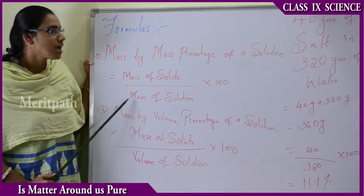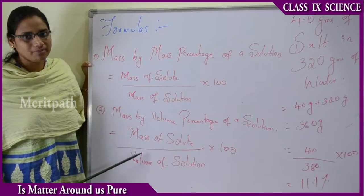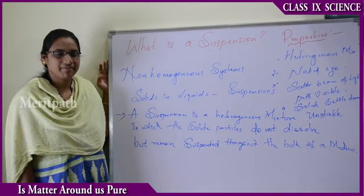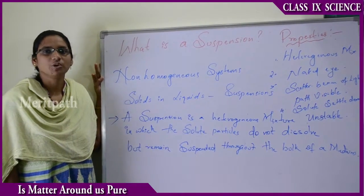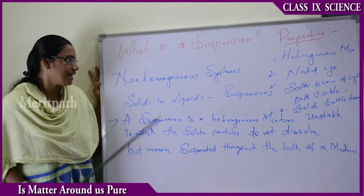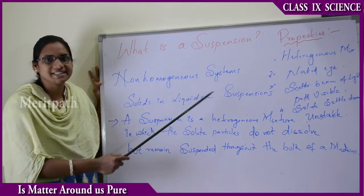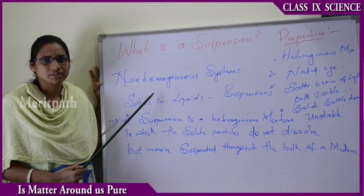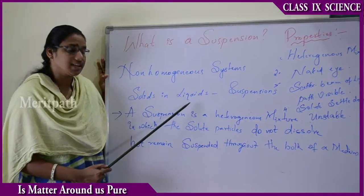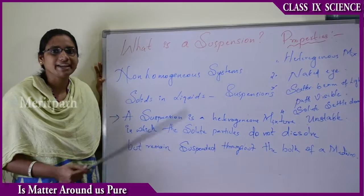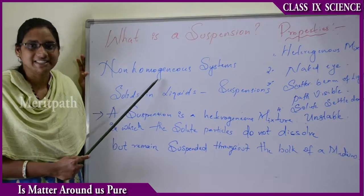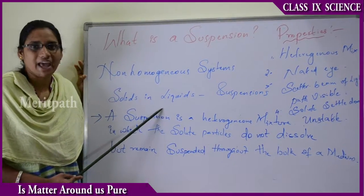We can calculate the percentages according to mass and volume for a solution. Now let us see what is a suspension. Previously we saw that a solution is a homogeneous mixture. A suspension, however, is a heterogeneous mixture — a non-homogeneous system, meaning it is constituted of different particles. Solid particles dissolved in liquids form a non-homogeneous system, and this is known as a suspension.